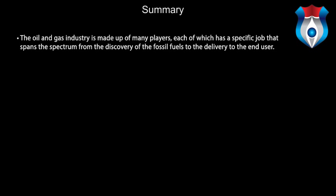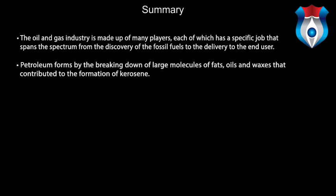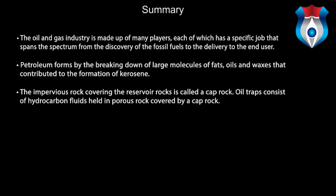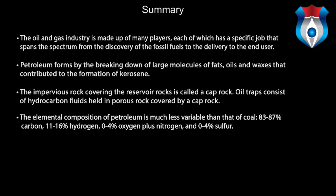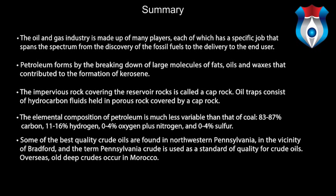Now let us summarize what we have learned in this lecture. The oil and gas industry is made up of many players, each of which has a specific job that spans the spectrum from the discovery of the fossil fuels to the delivery to the end user. Petroleum forms by the breaking down of large molecules of fats, oils, and waxes that contributed to the formation of kerogen. The impervious rock covering the reservoir rocks is called a cap rock. An oil trap consists of hydrocarbon fluids held in porous rock covered by a cap rock. The elemental composition of petroleum is much less variable than that of coal — 83–87% carbon, 11–16% hydrogen, 0–4% oxygen plus nitrogen, and 0–4% sulfur. Some of the best quality crude oils are found in northwestern Pennsylvania, and the term Pennsylvania crude is used as a standard of quality for crude oil.